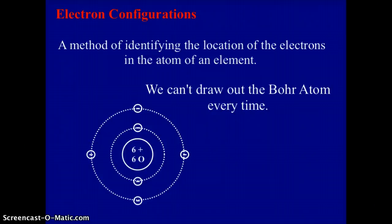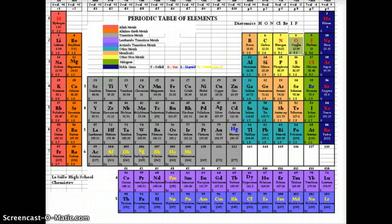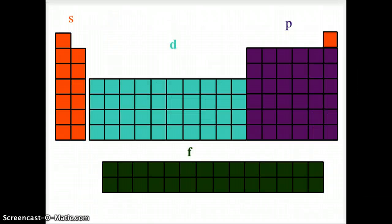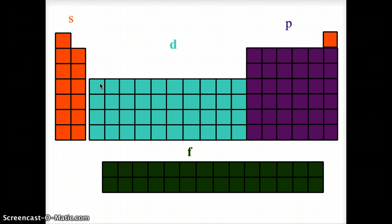This method will allow us to understand where electrons can be found, and it works with all elements on the periodic table. We're going to use the periodic table to figure out how electrons can be arranged. Here is the periodic table we're using in this class, and we're going to change that image slightly by drawing the periodic table in a way that shows orbitals or clouds where electrons are found, associated with where elements are located.